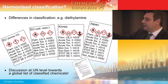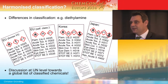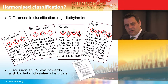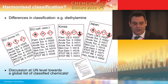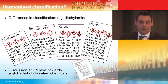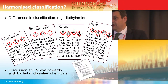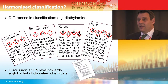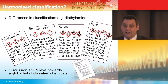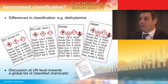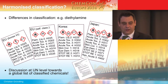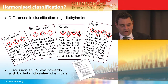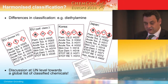These different classifications of one substance in different official lists in certain countries triggered discussion at UN level on whether it is possible to establish a global list of classified chemicals. This work is ongoing and will not lead to results in the very near future, but in my opinion by 2020 you will have an estimation of how a global list of classified chemicals could look like.